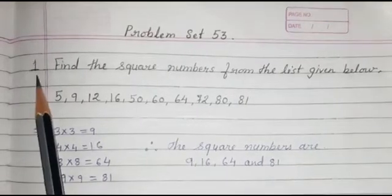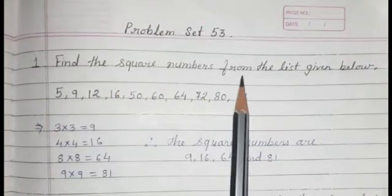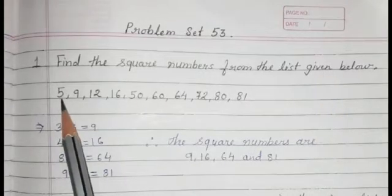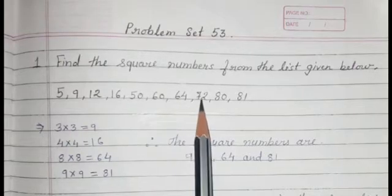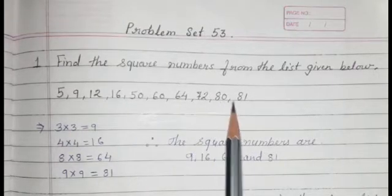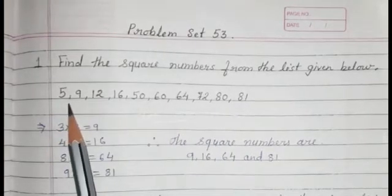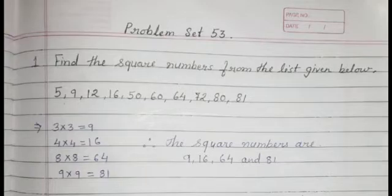Question number 1: Find the square numbers from the list given below. The numbers are 5, 9, 12, 16, 50, 60, 64, 72, 80, and 81. Now we will find out which numbers are square numbers. A square number means a number obtained by multiplying another number by itself.